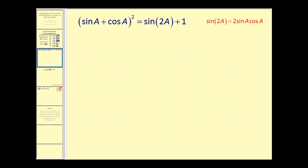We have a choice here to either use the double angle identity or we could multiply this out on the left. I'm going to go ahead and multiply the left side out. So we'll foil this.